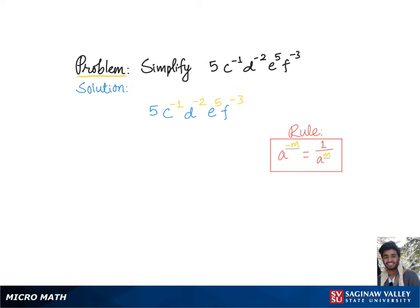Here in our problem, we have c^(-1), d^(-2), and f^(-3) as negative exponents in the numerator. So to simplify our problem, we'll just move them to the denominator.